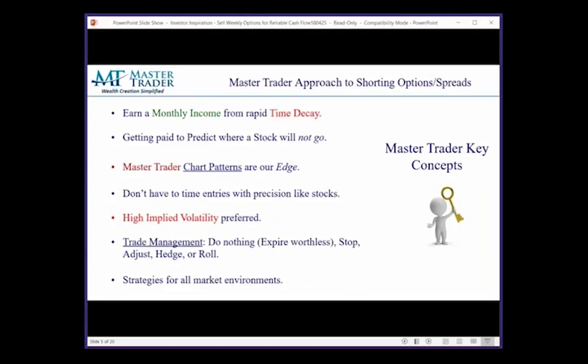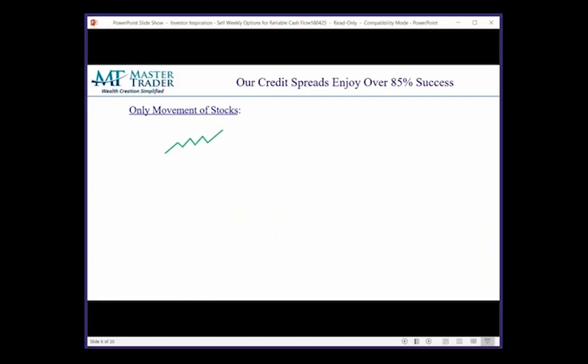I don't care what environment we're in — we find opportunity every single day. The market can be up, down, choppy, risky, consolidating, ultra bullish, ultra bearish. We are going to find these setups every day. What do stocks do? These are the only movements — keep it simple. They can go up, they can go down, and they can go sideways in a consolidation.